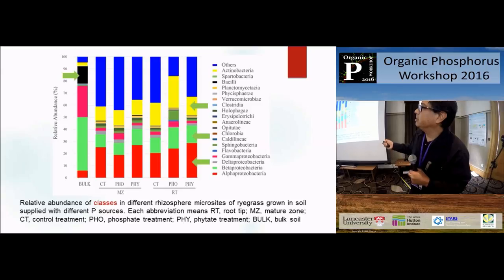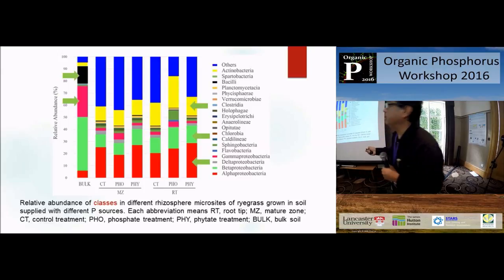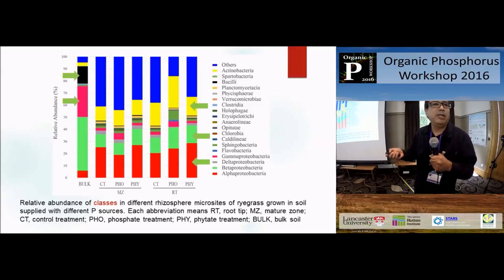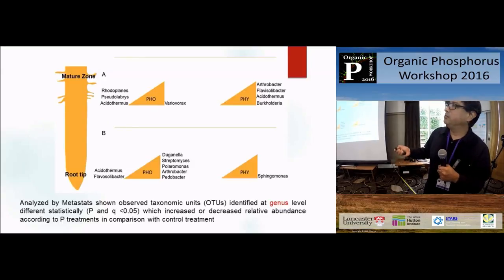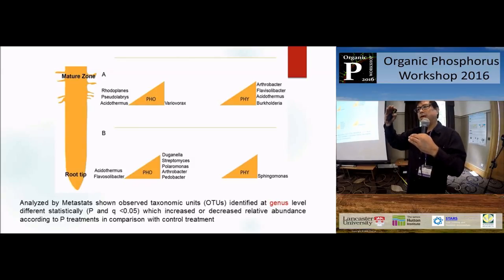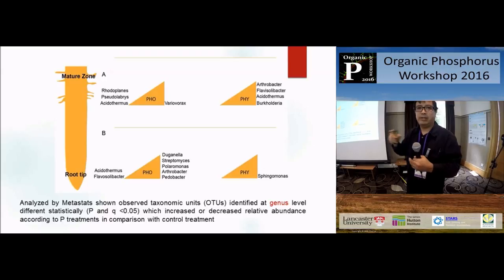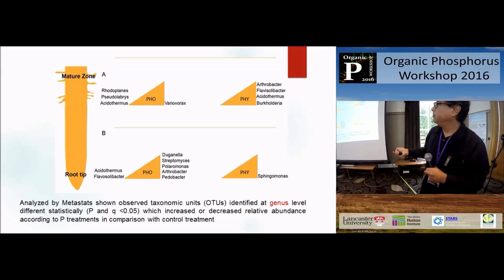One of the differences is Bacillus - Bacillus is disappearing with the plant. Also Gammaproteobacteria - we had Pseudomonas and very typical bacteria which are not isolated in the lab. When we go to the genus level, we can see that addition of phosphorus can improve some genus, and also decrease some genus. But we have to be careful with this result - it is about relative abundance, which is in relation to total bacteria, not the same as absolute abundance, which is how many cells we have in the soil.